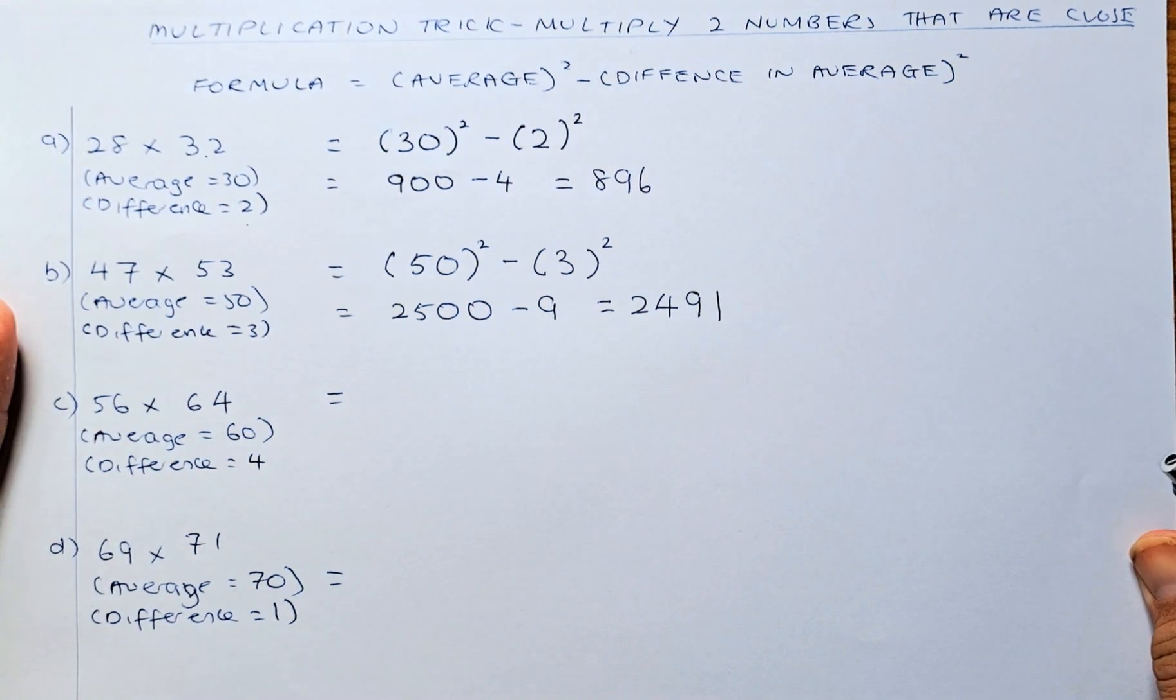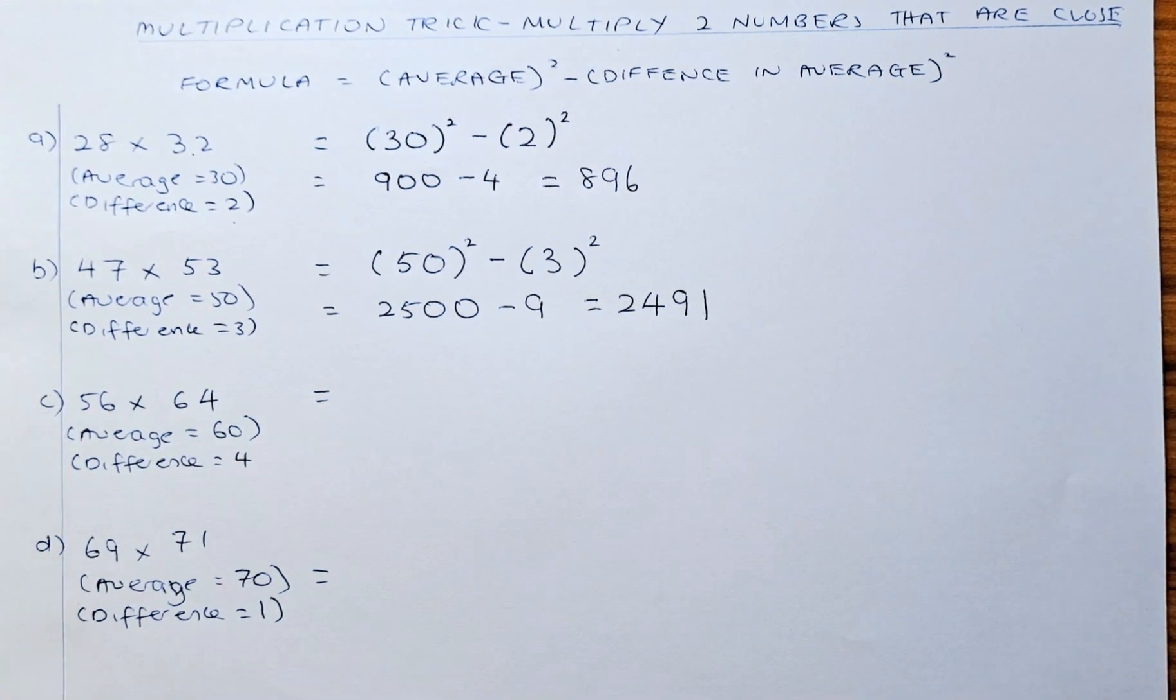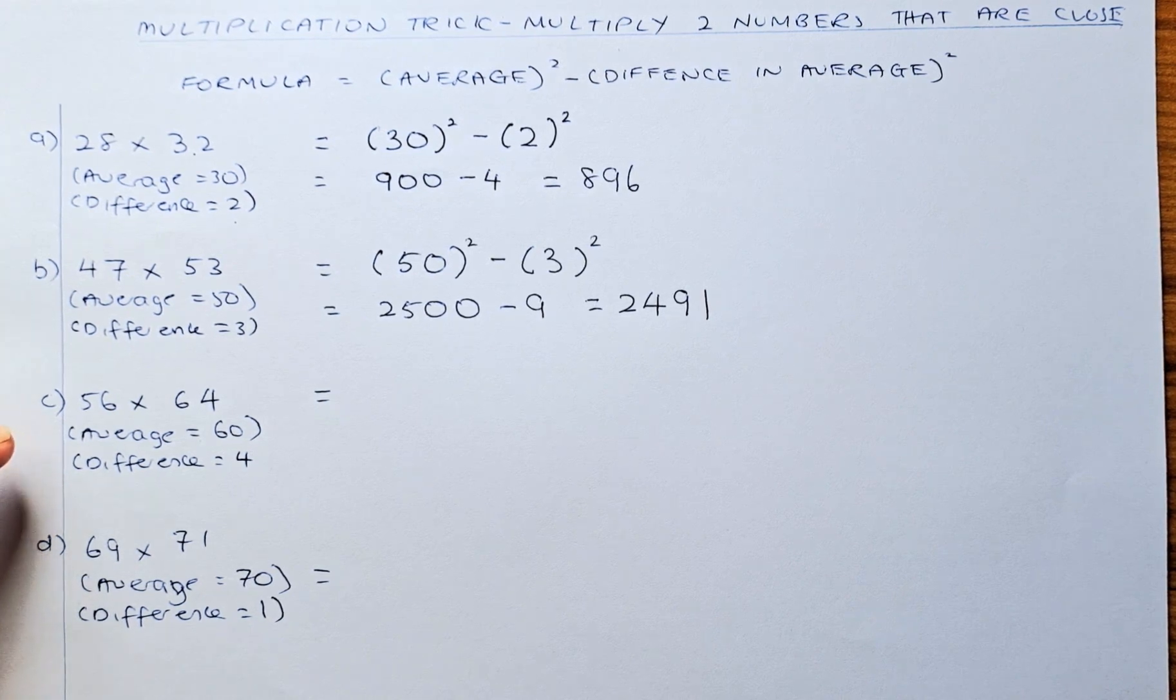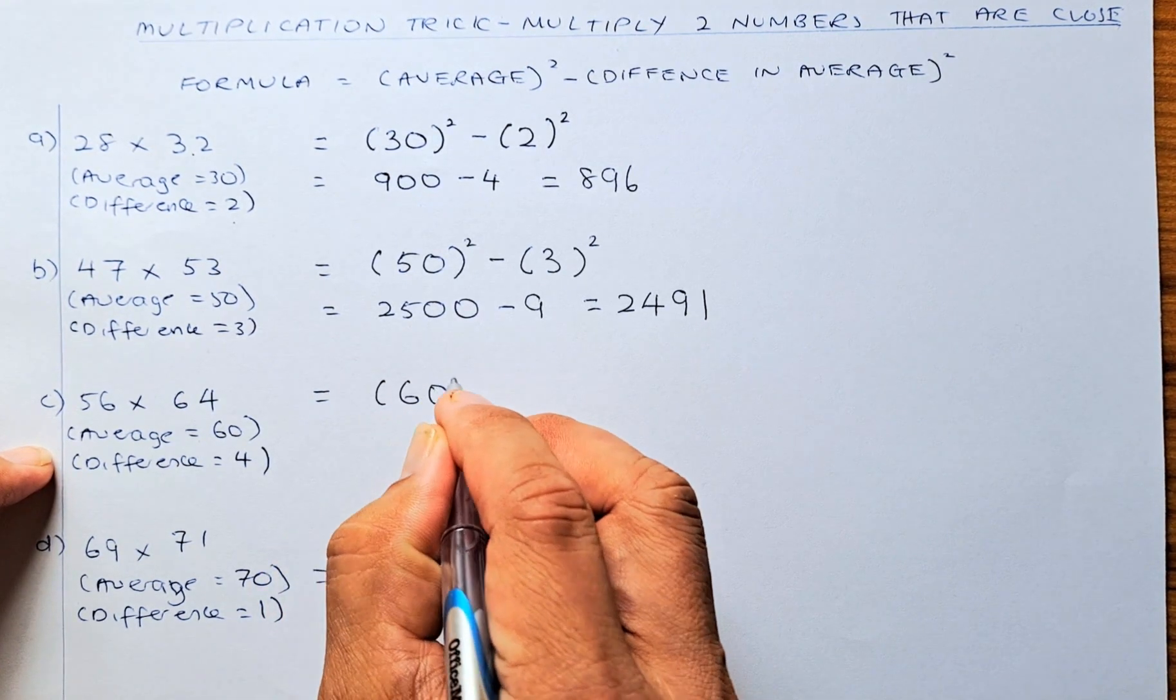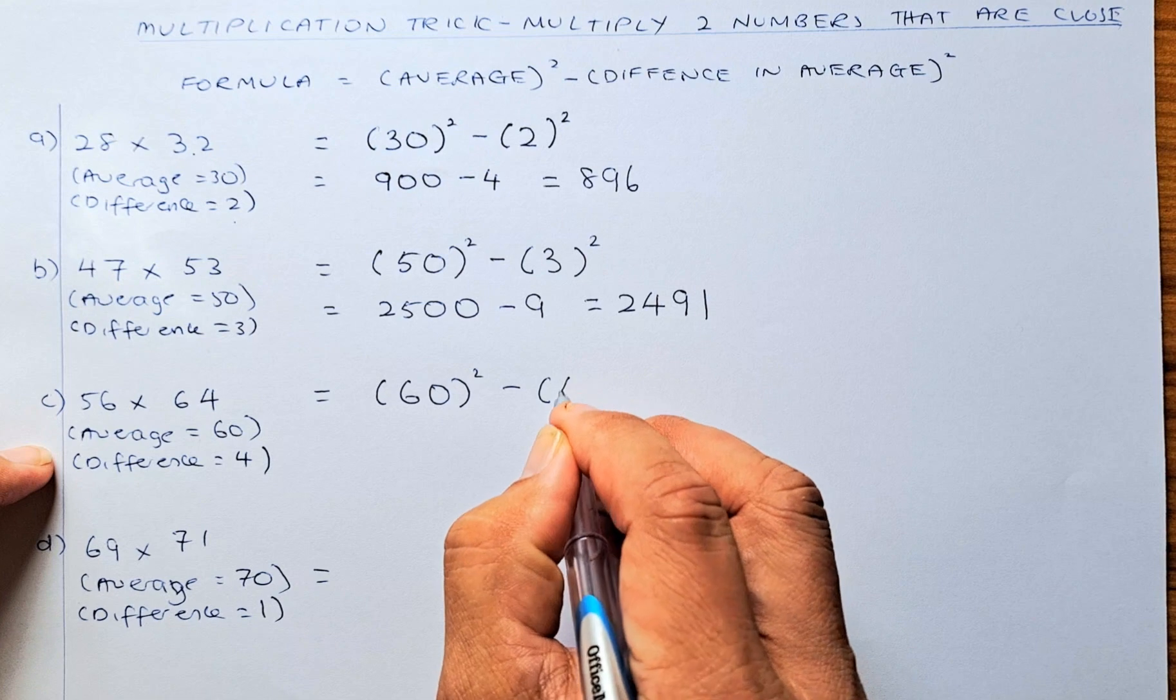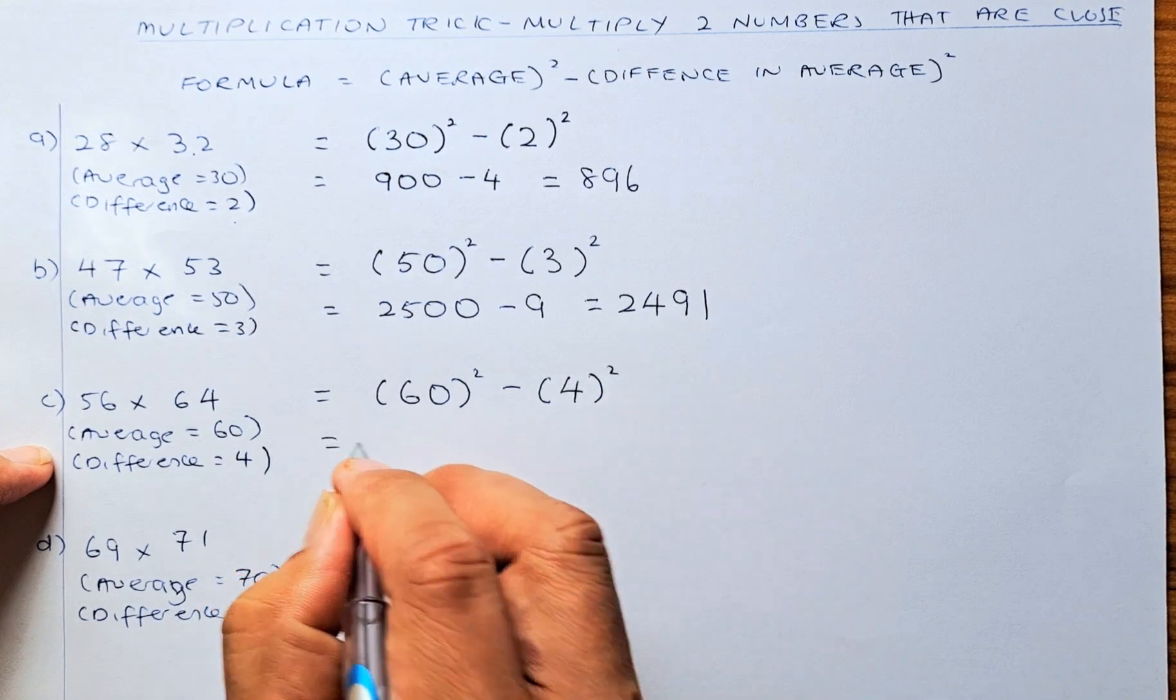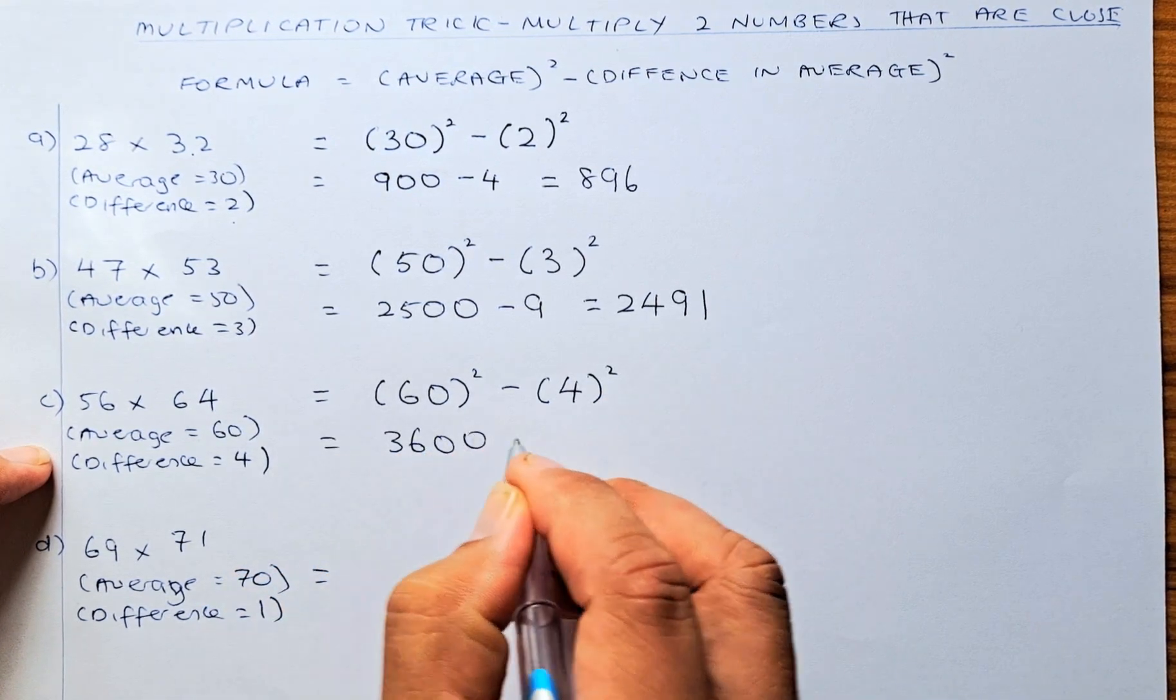That's quick, isn't it? Next one: we have 56 times 64. The average is 60, and the difference is 4 because 64 is 4 more than 60 and 56 is 4 less than 60. So the formula is 60 squared minus 4 squared, which gives you 3,600 minus